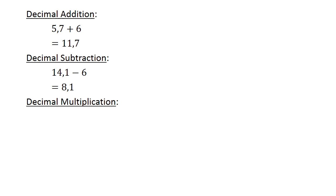Decimal multiplication: 0.4 times 0.004 equals 0.0016.